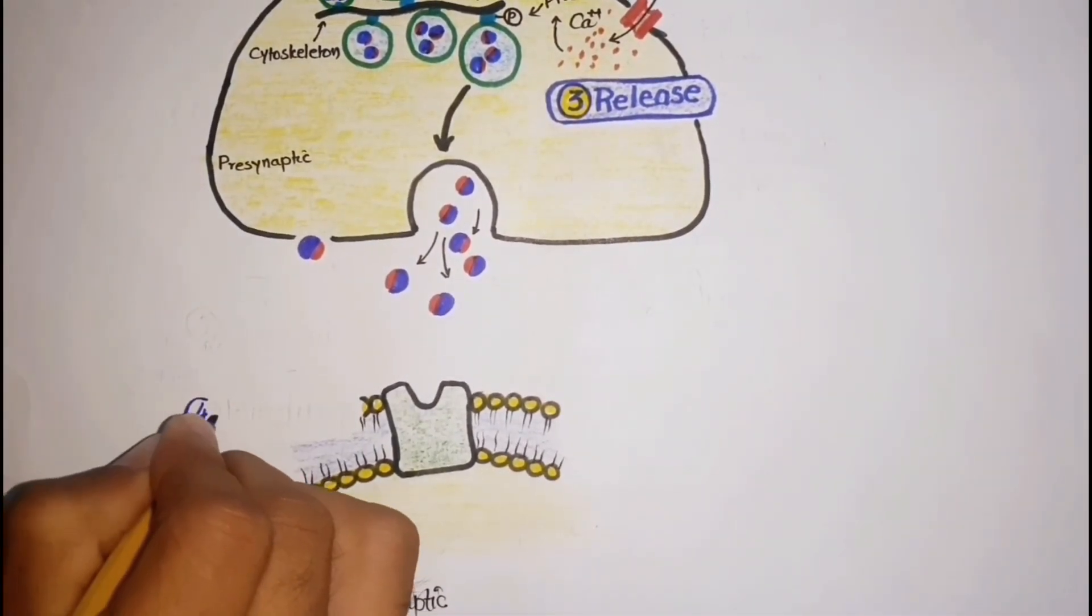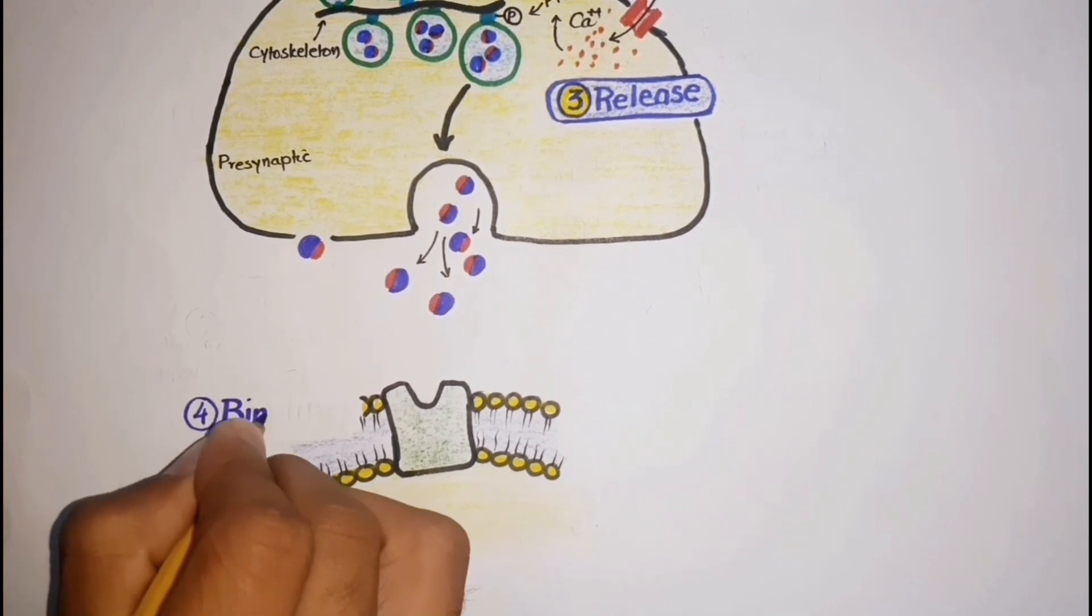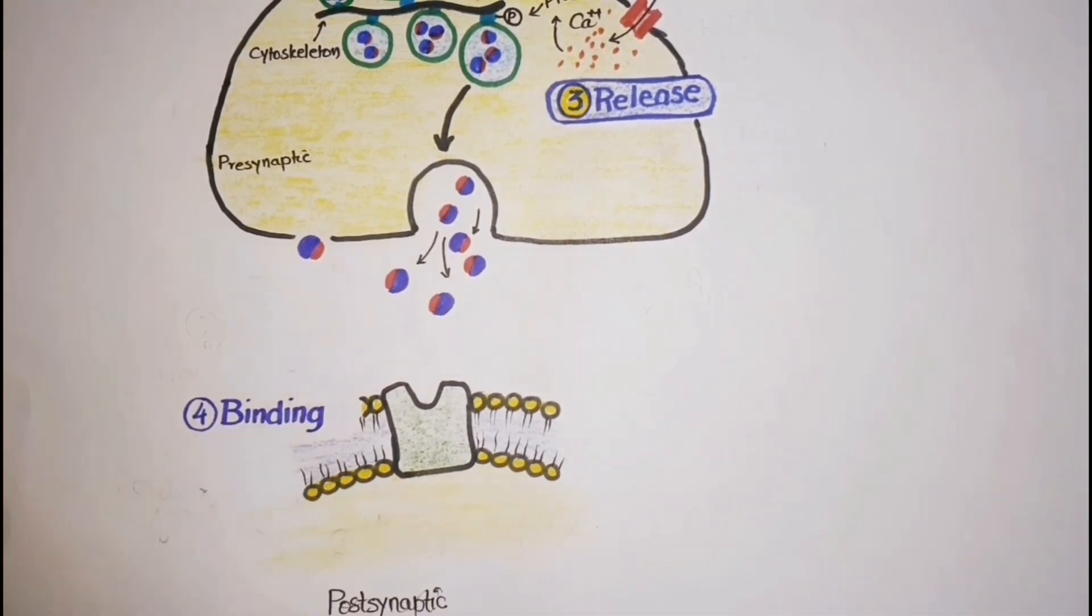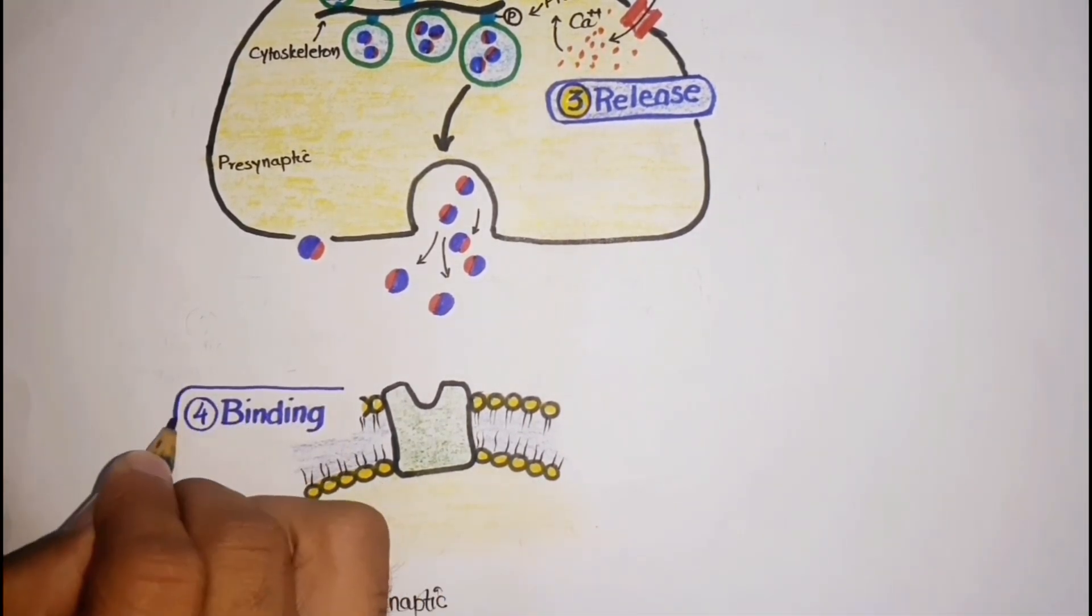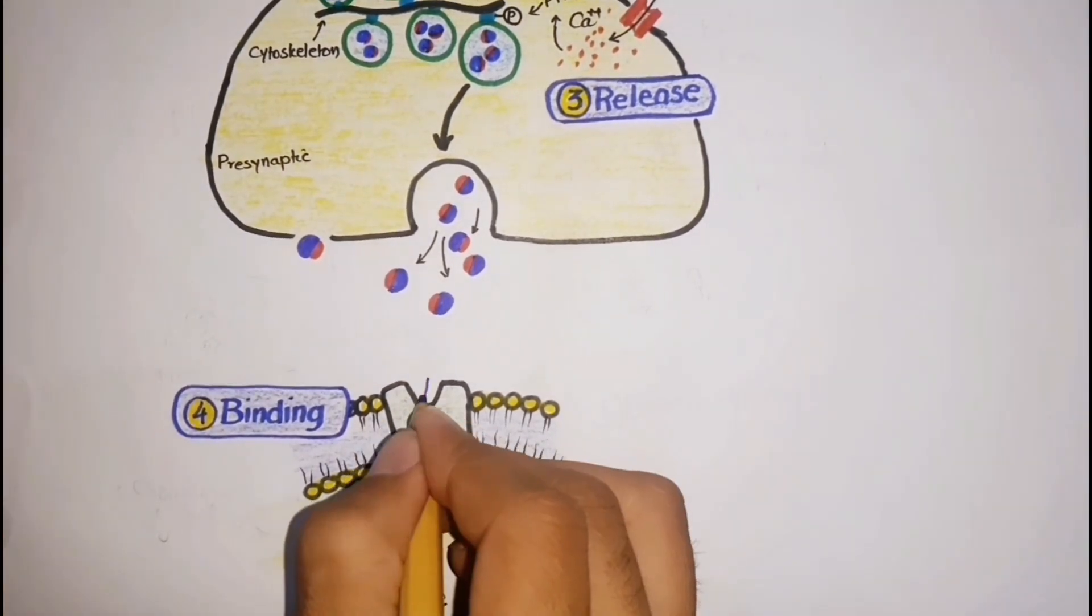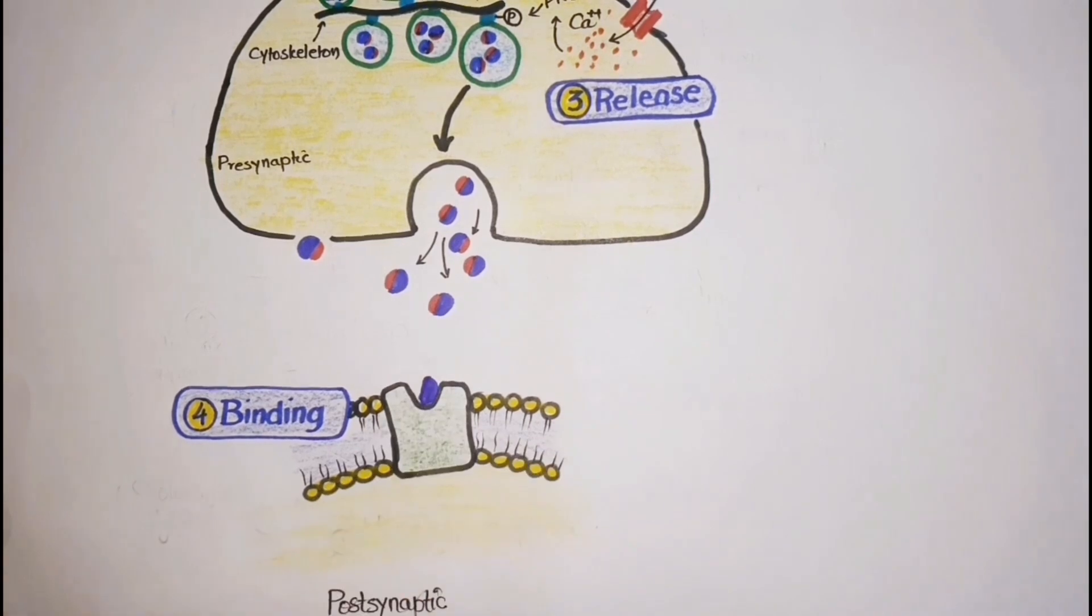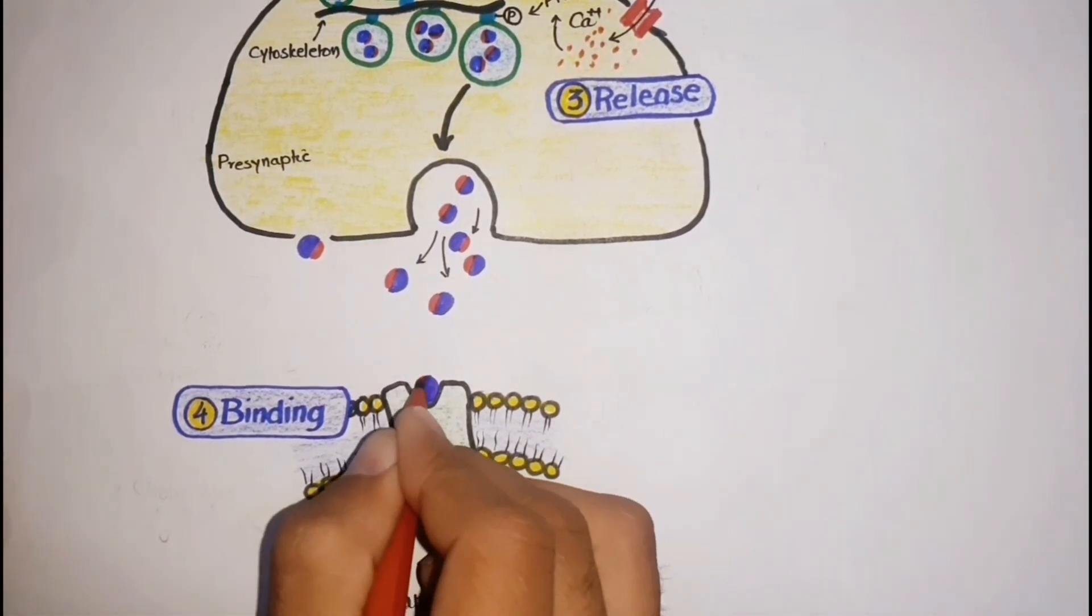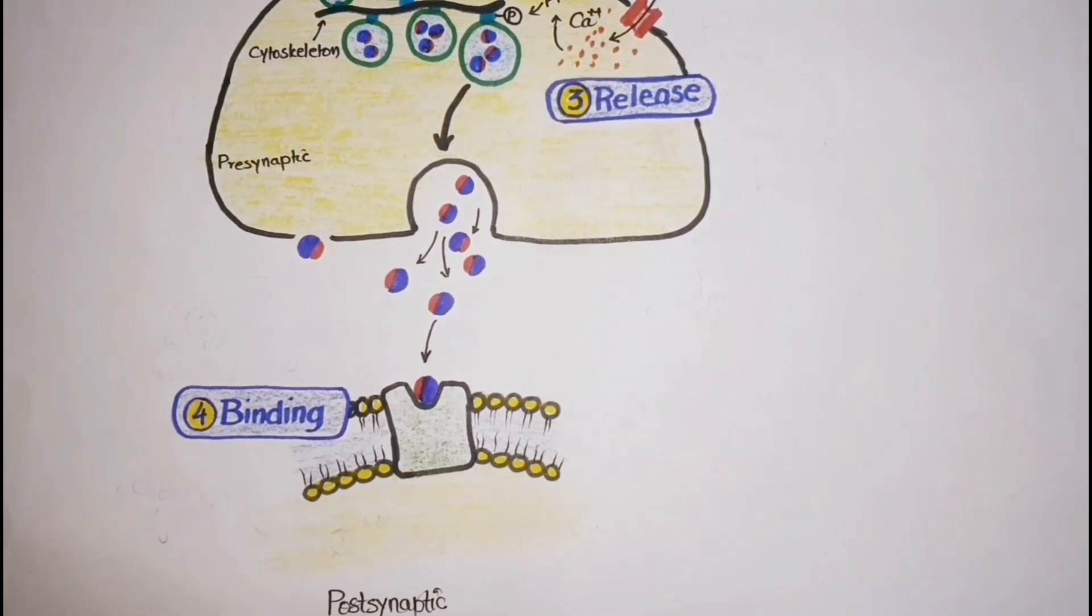The next step is the binding of acetylcholine to its receptors. Released acetylcholine diffuses across the synaptic cleft and binds to postsynaptic receptors on the target neurons or effector sites like muscles or glands.